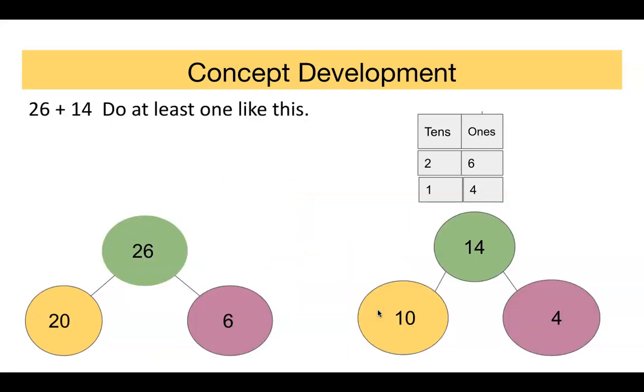Do at least one like this, where the ones place value is adding up to 10. So we have 26, which is 20 plus 6. 14 is 10 plus 4. Once again, two tens, six ones, one ten, four ones.